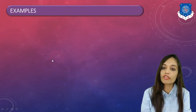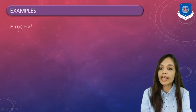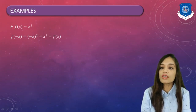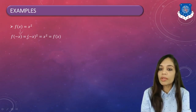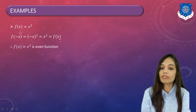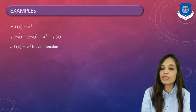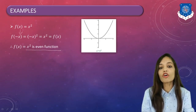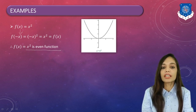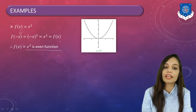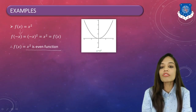Let us see examples of even and odd functions. Take f(x) = x². To check whether it is even or odd, we replace x by −x: f(−x) = (−x)² = x² = f(x). Therefore f(−x) = f(x), so by definition f(x) = x² is an even function. Looking at its graph, it is a parabola symmetric about the y-axis. Hence the graph of even functions is always symmetric about the y-axis.